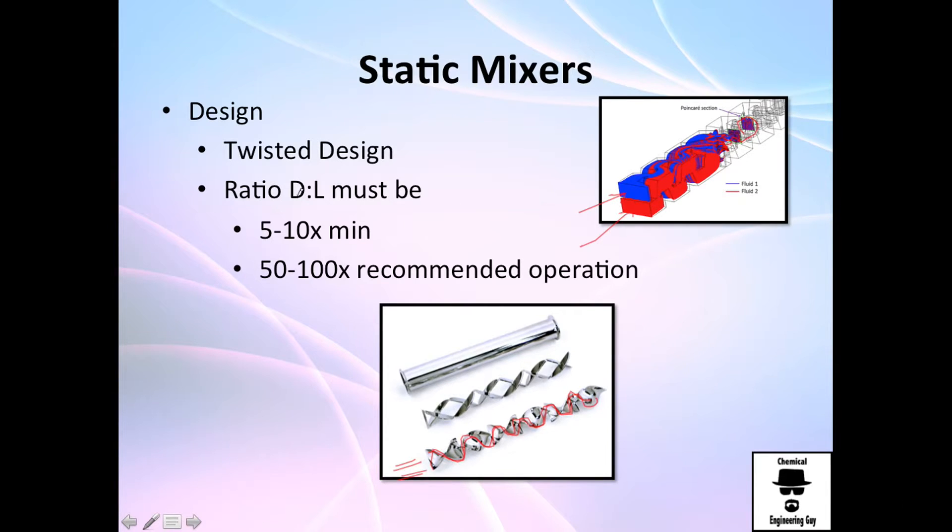You typically measure the ratio between diameter and length. Five to ten is the minimum, but the recommended one is a longer ratio. So if you have one centimeter diameter, the minimum will be 5 to 10 centimeters length, but most recommended is between 50 and 100 centimeters. You want a very long tube, not just a short cylinder.